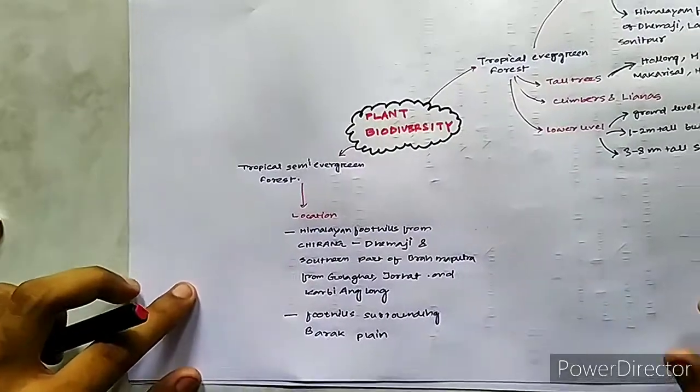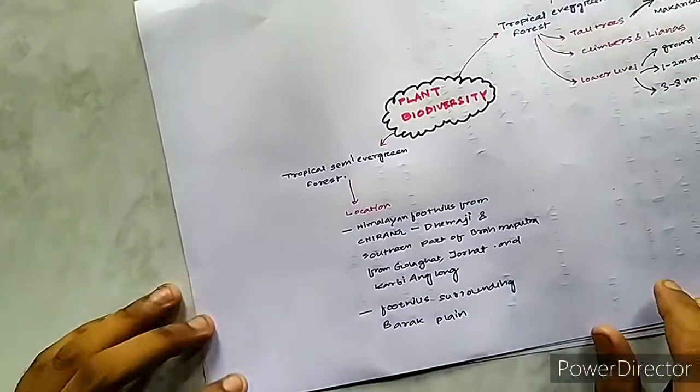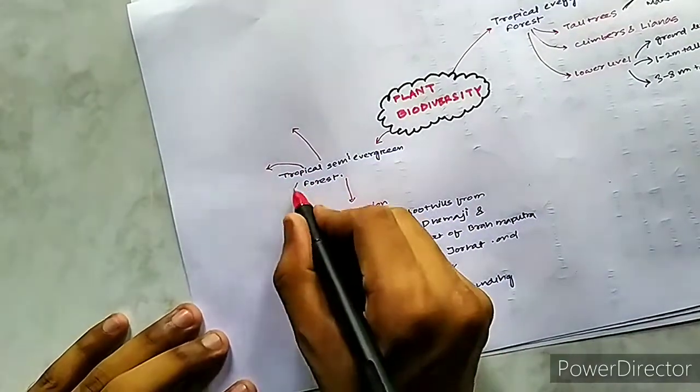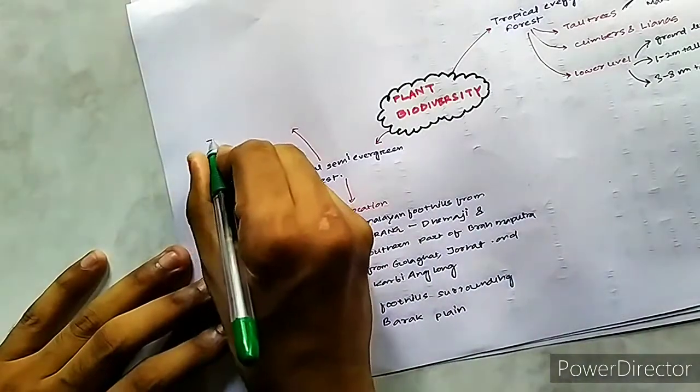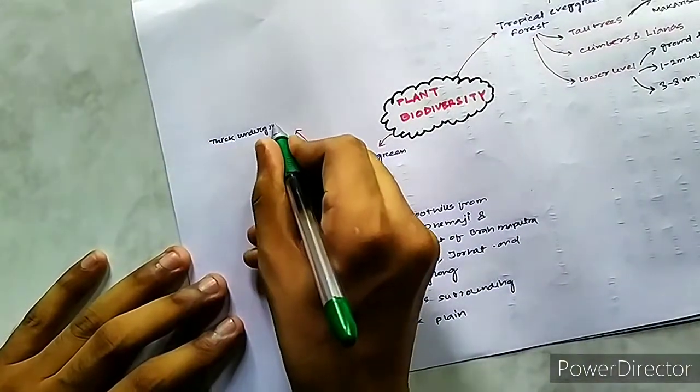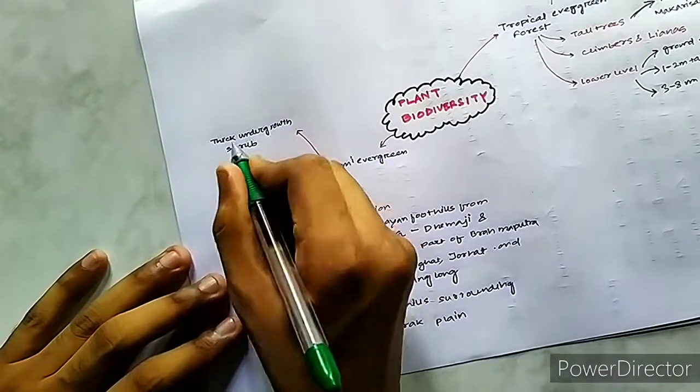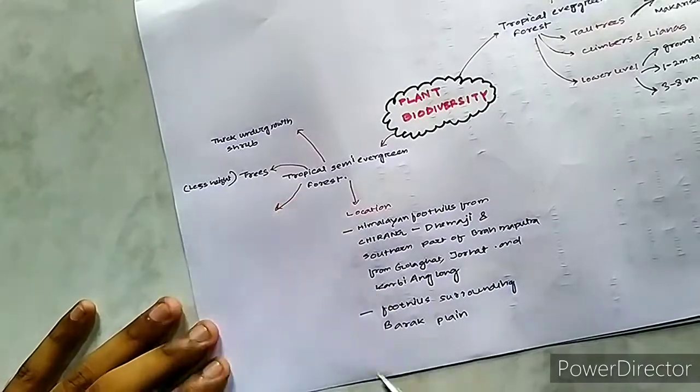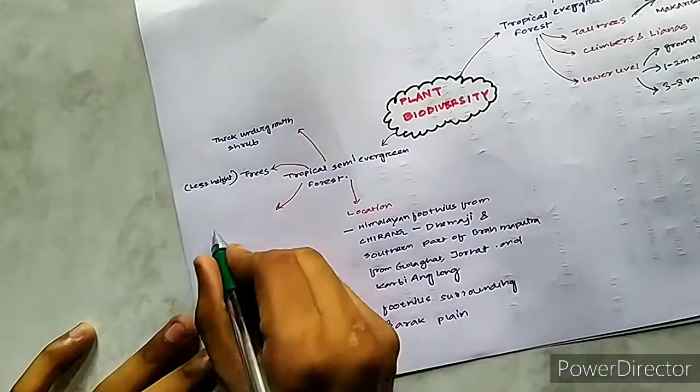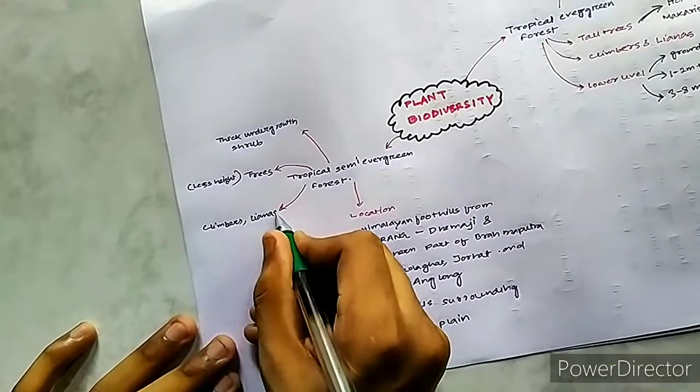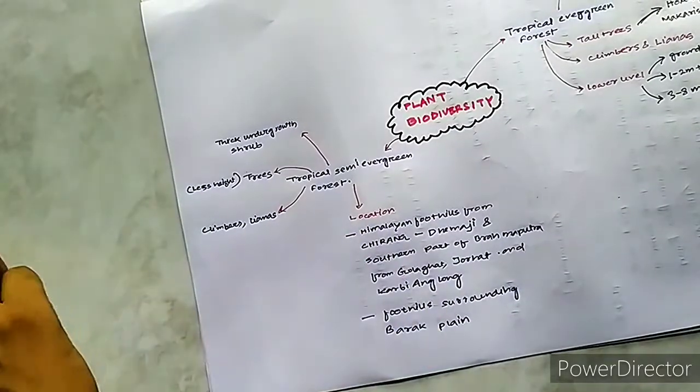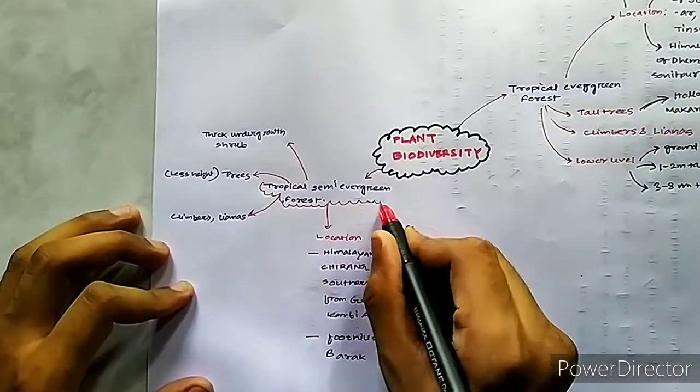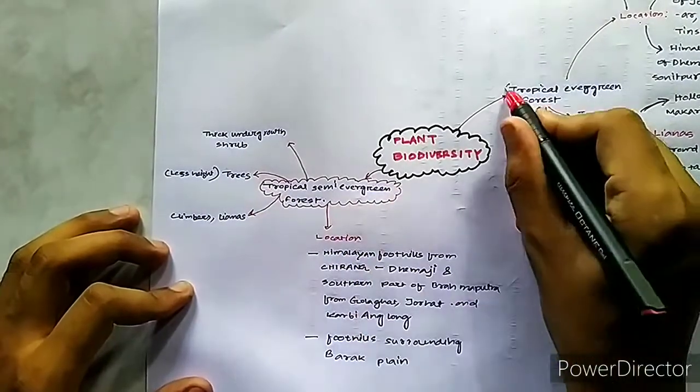The forest also have thick undergrowth with evergreen shrubs, but their trees do not reach the height of the tropical evergreen forest. The common varieties in the trees are Champa, Kadam, Amari, Canarium species, Magnolia species, Nahar and Dipterocarpus, etc. There are also climbers and lianas. The ground is covered with decomposed leaves which supports many worms and insects, which in turn supports the amphibians, reptilians and small mammals.